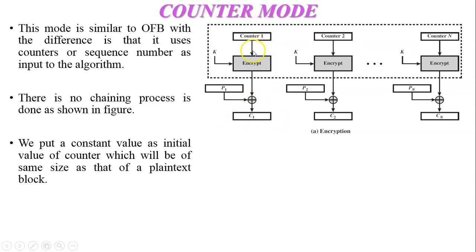Before generating ciphertext there is an encryption algorithm used. In the encryption algorithm input is the key K. The size is 64 bits and the second input of the encryption algorithm is counter one, and the size of counter one is 64 bits.